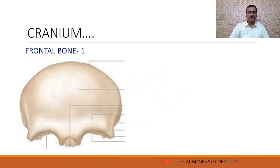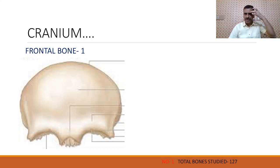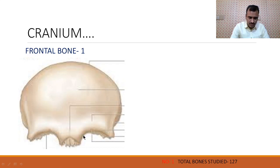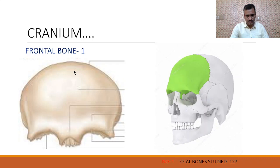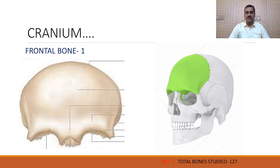First is the frontal bone. As the name suggests, it is in the front — it forms our forehead. This bone is frontal; here you can see it just starts above the eyebrow, above the nose, and the complete forehead is formed, and approximately half of the head is also formed by it. The type is flat bone. So this portion is made up of frontal bone. There is only one frontal bone.